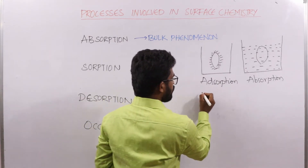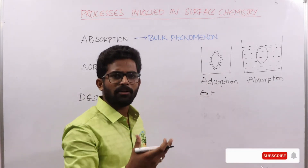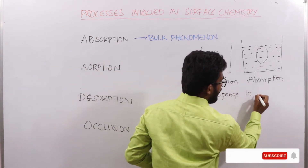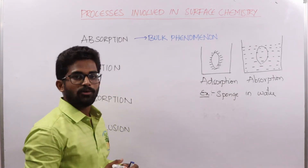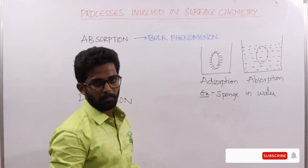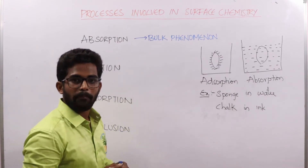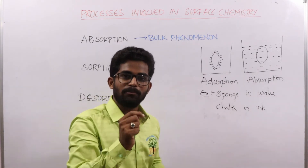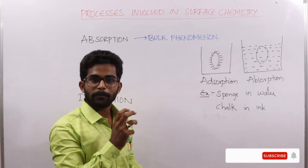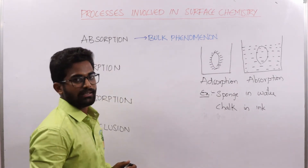Let us discuss some examples of absorption from our daily life. The first example is a sponge dipping in water — when you dip a sponge in water, the molecules of water are uniformly distributed throughout the sponge, and that process is called absorption. The second example is chalk dipping in ink — when you dip a white chalk into blue, black, or red ink, the chalk immediately takes on that color. That process occurs due to absorption.